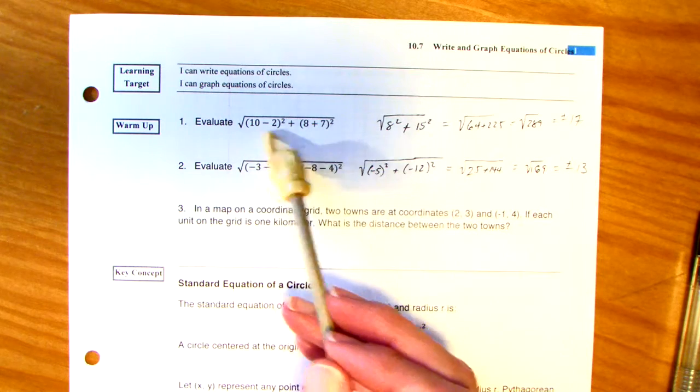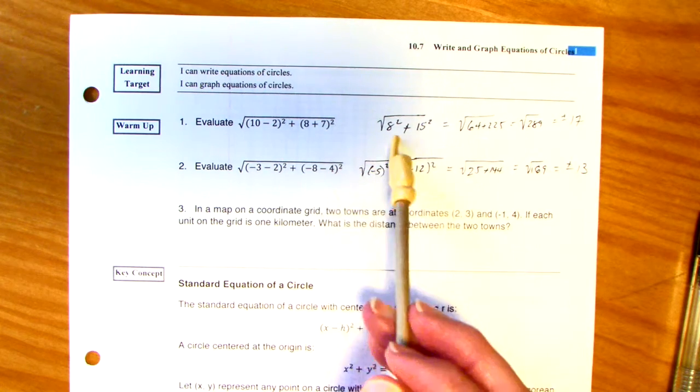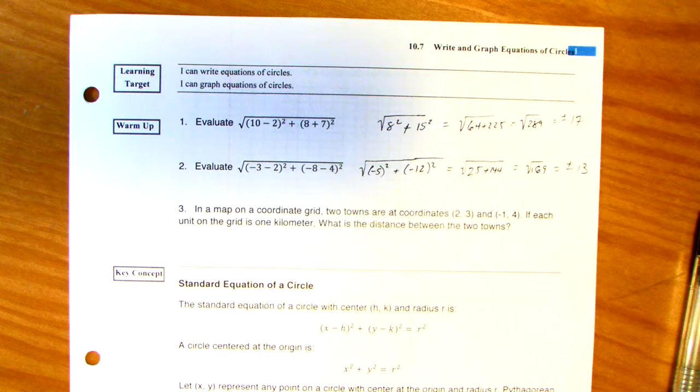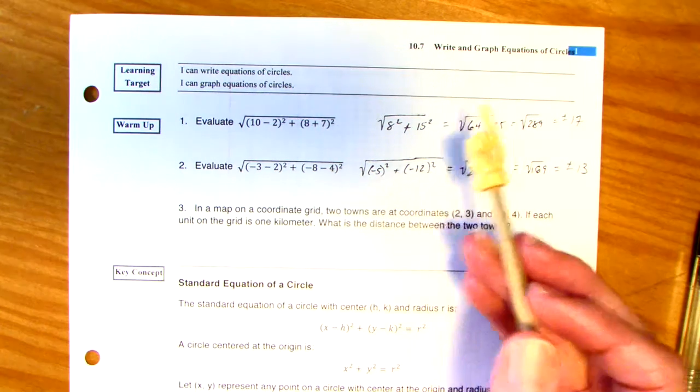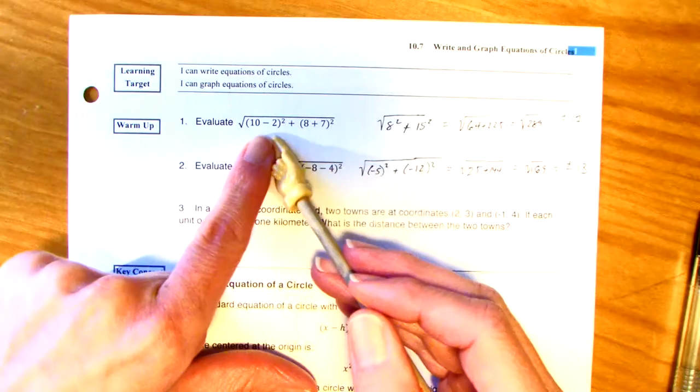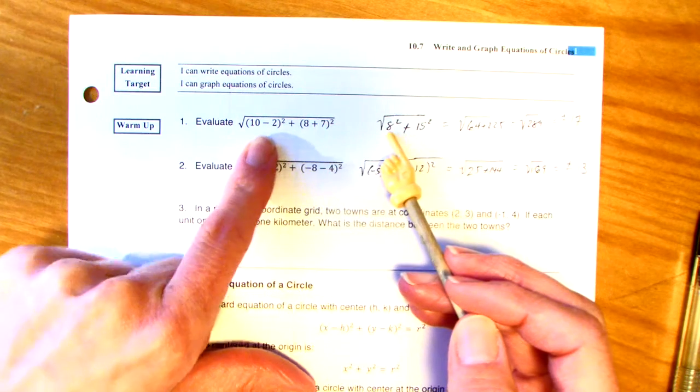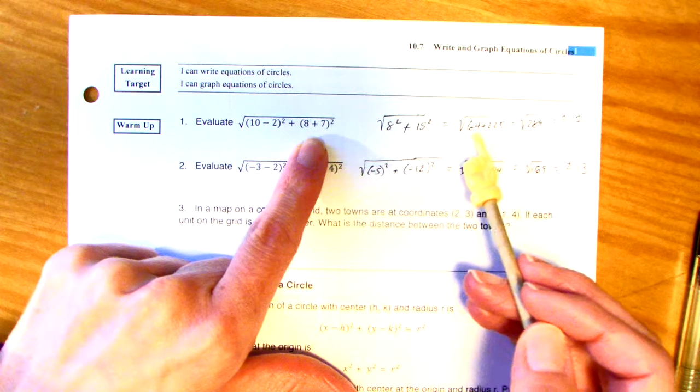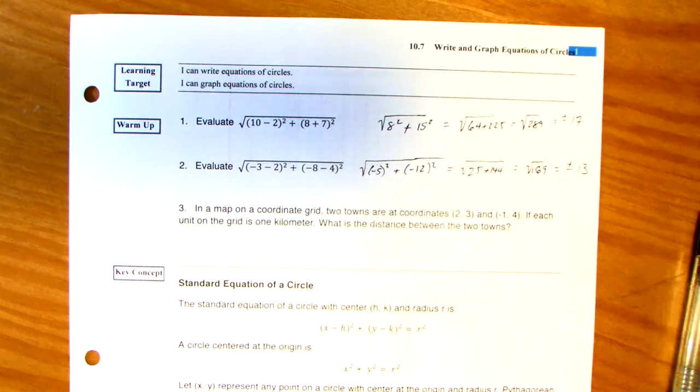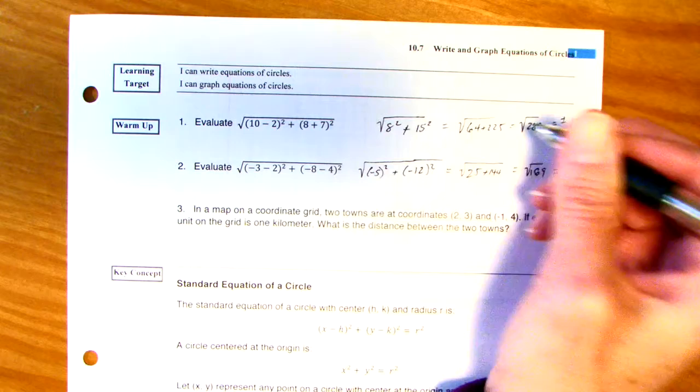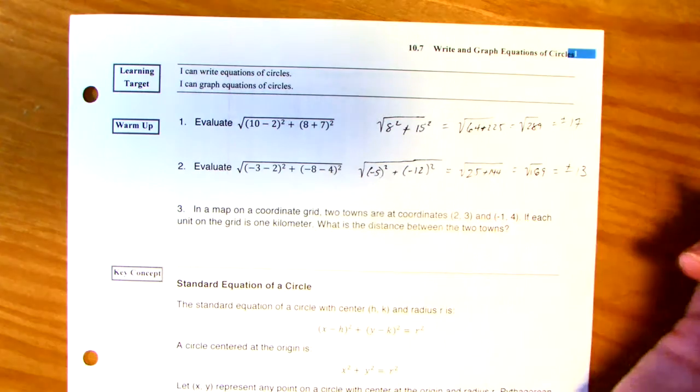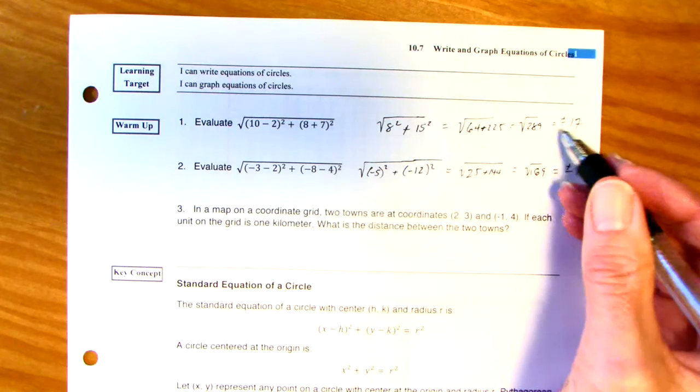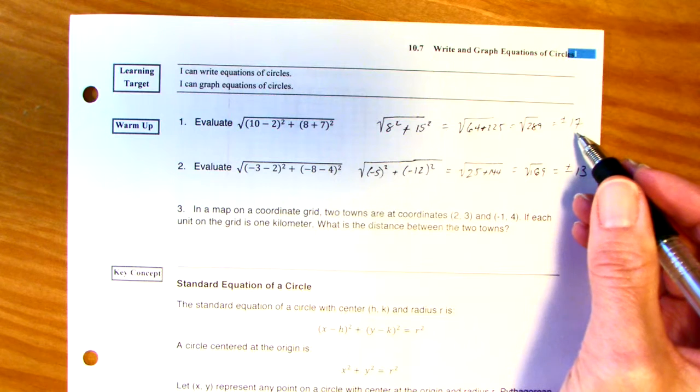So, here we go. These two look like the distance formula. The reason I haven't worked out is because I started the video earlier and realized it wasn't recording. So, here we go. The difference between 10 and 2 is 8 squared plus 15 squared. Take the square to that. So, 64 plus 225. It's kind of hard to see that little plus sign.